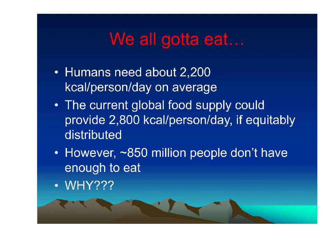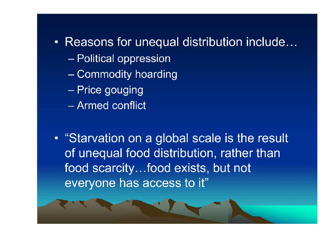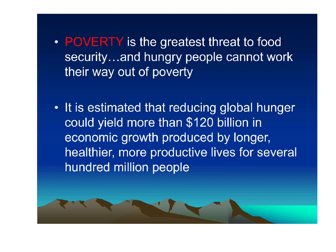Approximately 850 million people don't have enough to eat. Reasons for unequal distribution of food include political oppression, commodity hoarding — which the U.S. is actually very guilty of — price gouging, and armed conflict. These are reasons why people cannot grow the food they need or get food to where it needs to be. As your textbook states: starvation on a global scale is the result of unequal food distribution rather than food scarcity. Poverty is the greatest threat to food security worldwide.